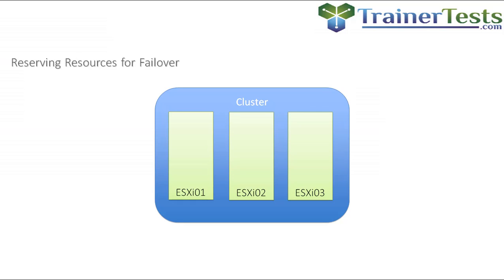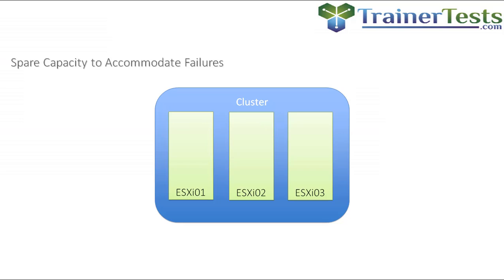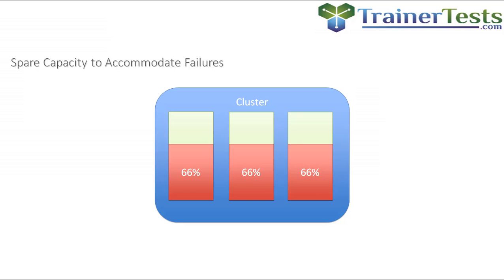Here we see a cluster of ESXi hosts, and on each of these ESXi hosts, we're utilizing about 80% of the memory or CPU. If one of these hosts now fails, there's not enough spare capacity on the surviving hosts to adequately run those virtual machines. Therefore, we need something like Admission Control to place some limits on these hosts and ensure that we don't run so many VMs that we can't tolerate a failure.